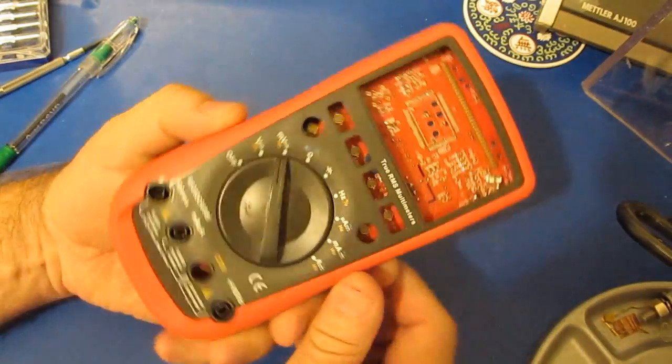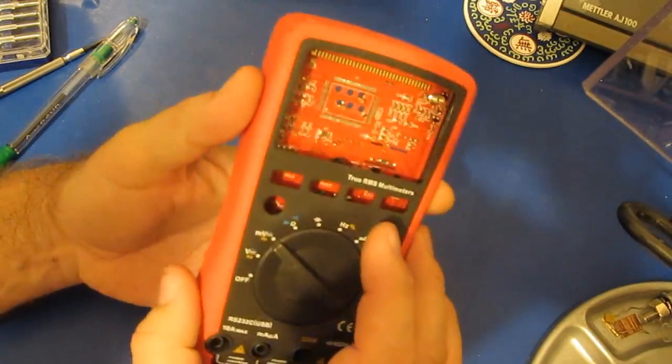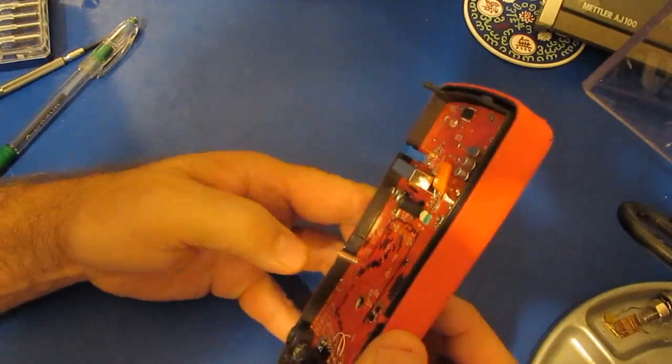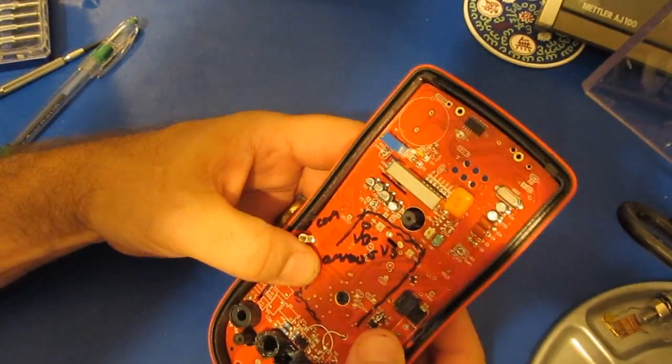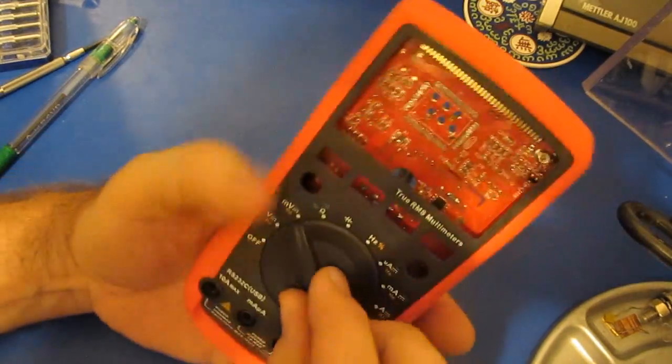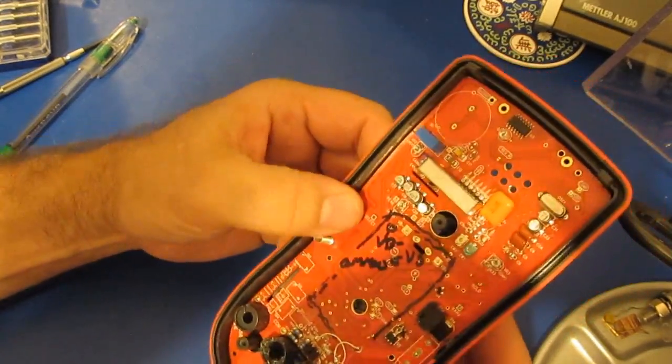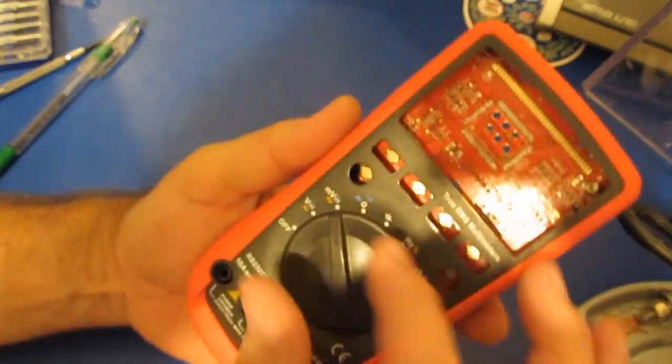I think that's going to be it for this video. It looks like the UT61e that 5ky provided me actually is holding up quite well to this testing, so I'm pretty impressed. Again, I wouldn't consider that a brand new meter from Unity would behave like this.